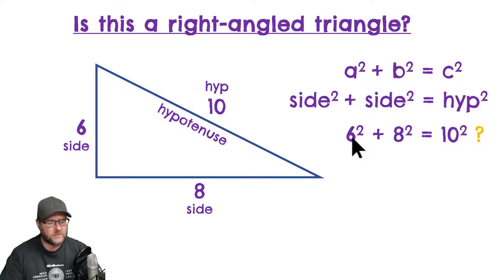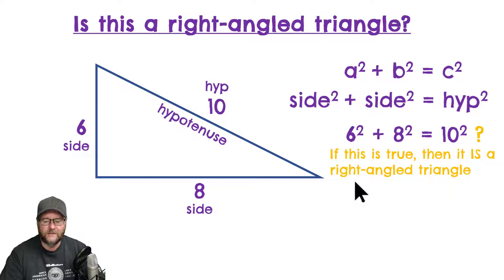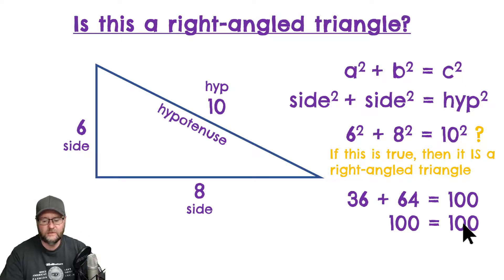So, let's check the numbers. Six squared is 36, eight squared is 64, and if this works out to be true, it's a right angle triangle. So, 36 plus 64 adds to 100. 100 does equal 100, so therefore, we would say it is a right angle triangle.